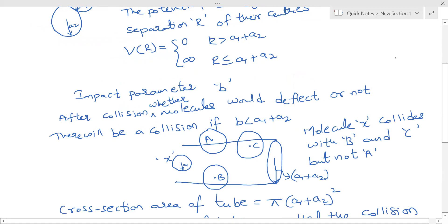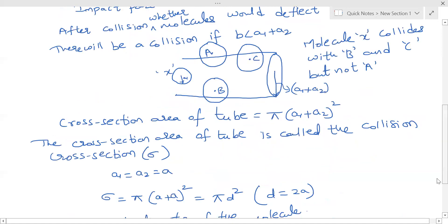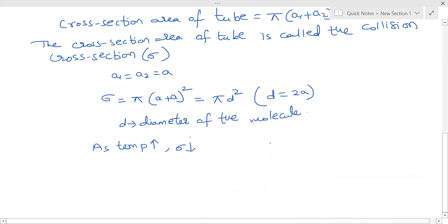In the previous lecture we saw the mean collision time, where we discussed the volume swept by the molecule. This cylinder volume is nothing but the volume swept by the molecule. σ is the cross section and the distance it travels is V times dt. When we multiply with cross section, we get that volume swept by the molecule.